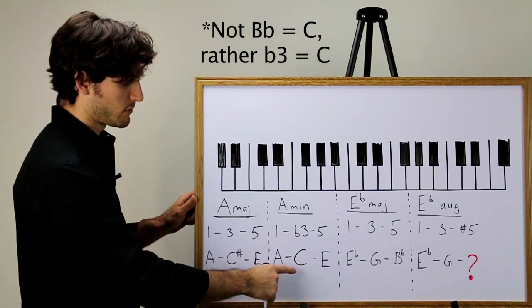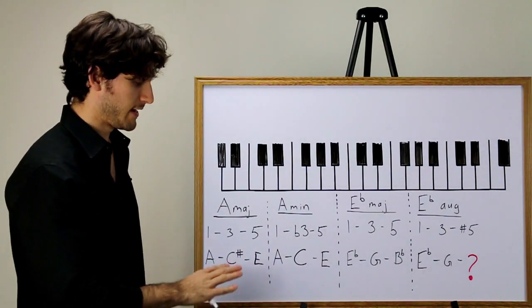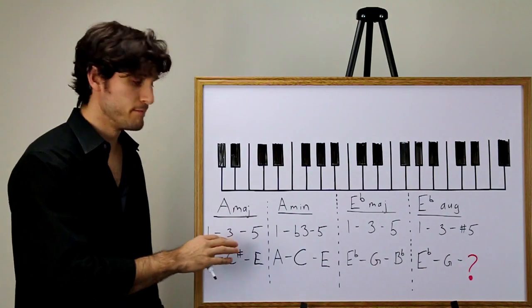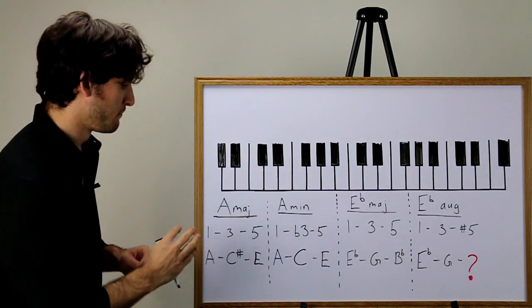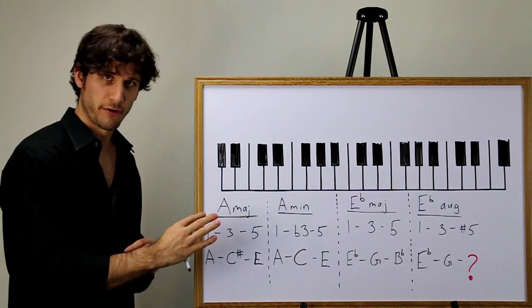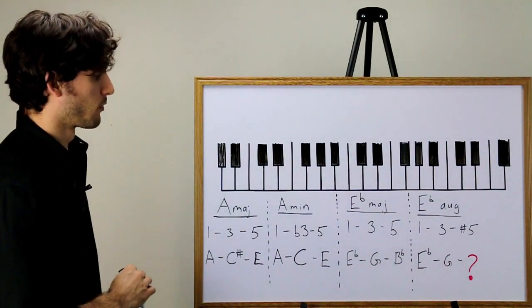This sometimes confuses people because we have flat three equals C. There's a flat describing this three, but there's no flat anywhere near the C. You don't have to write C flat. In fact, that would be wrong. The flat in front of three just means that we must go one half step below the major third, whatever that is.